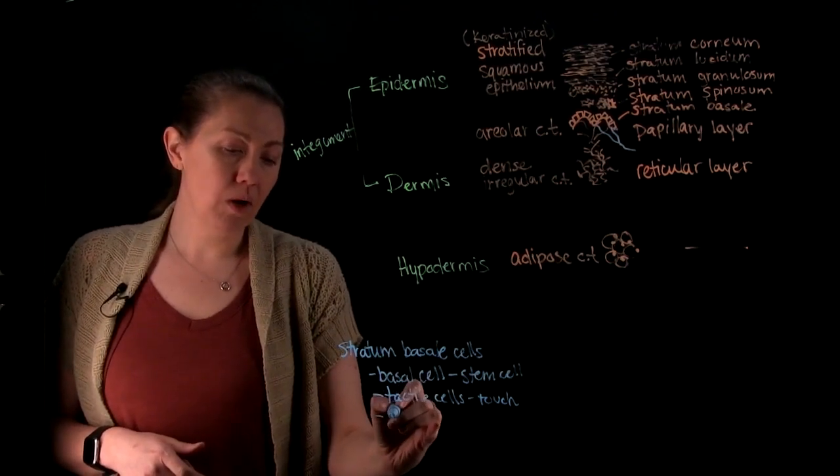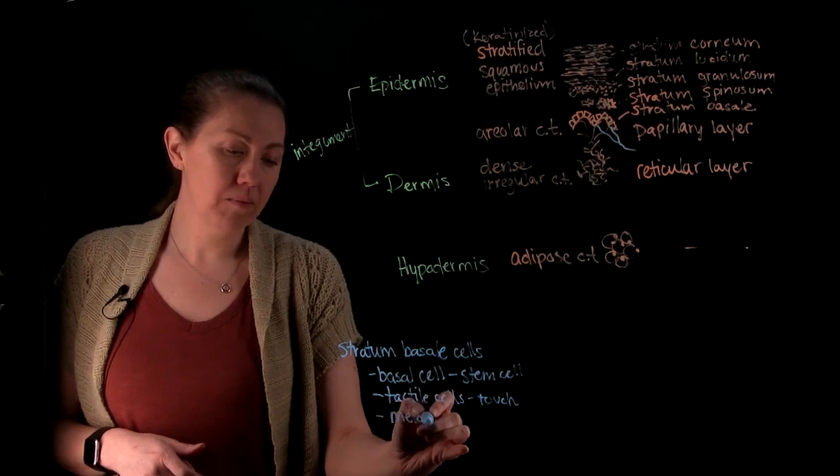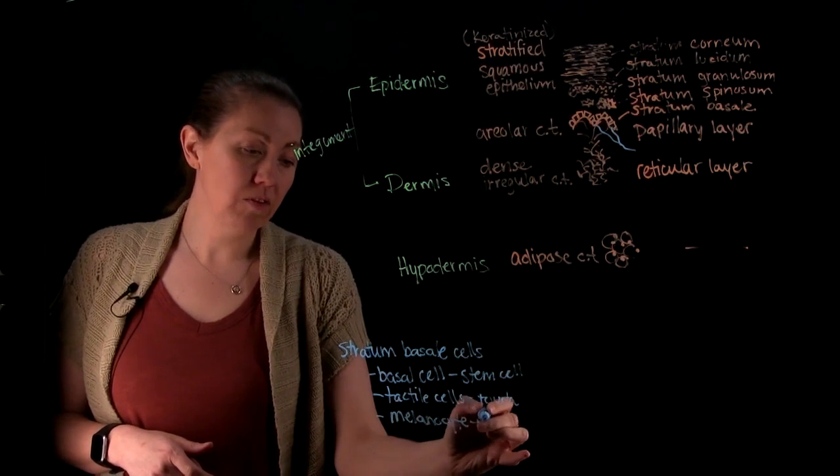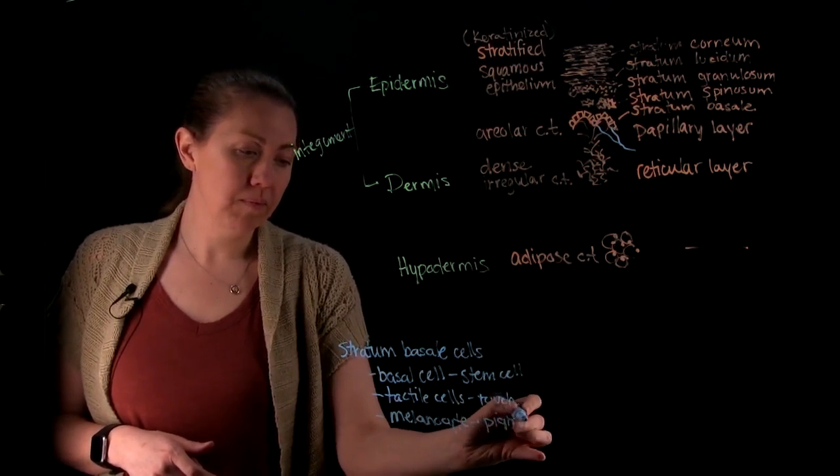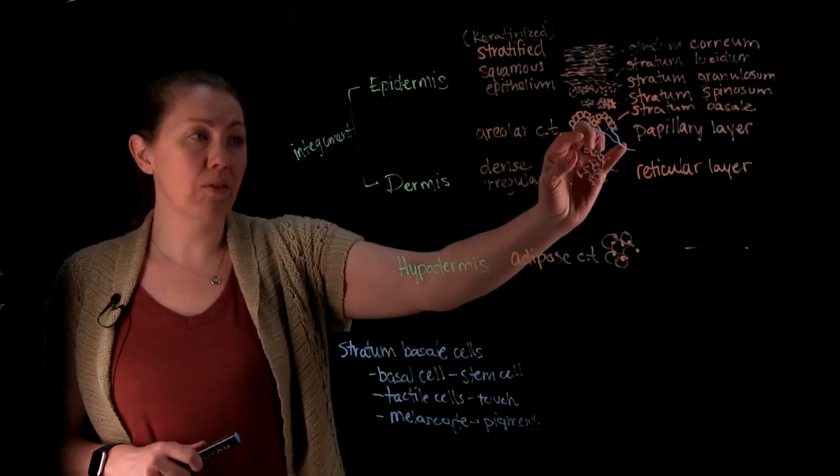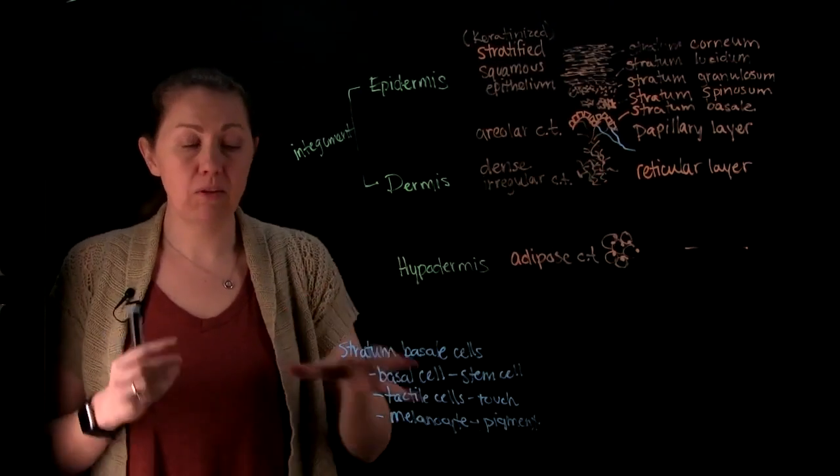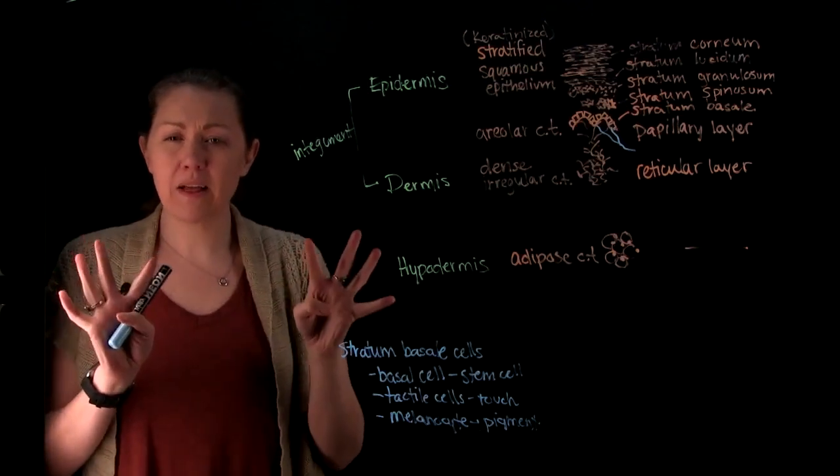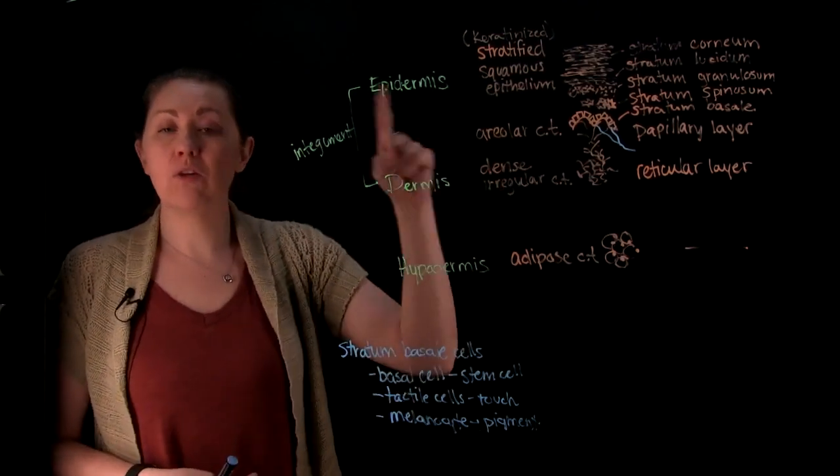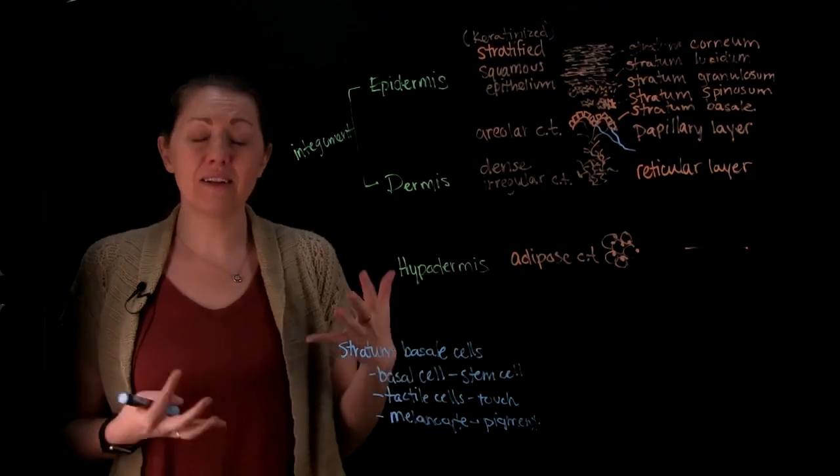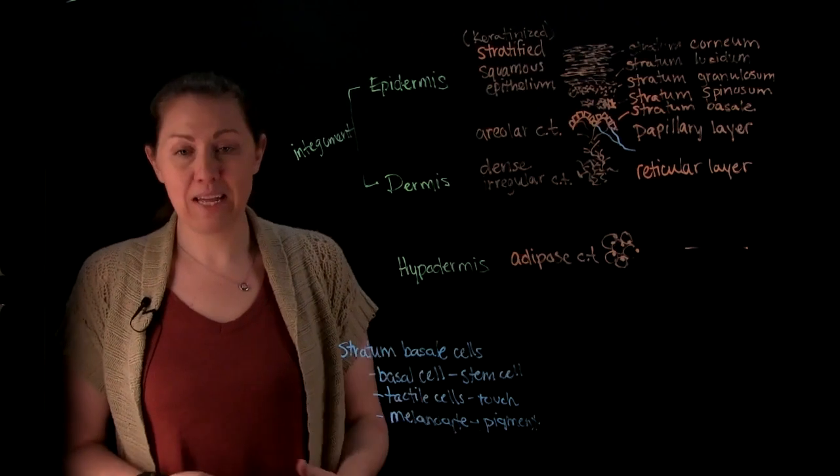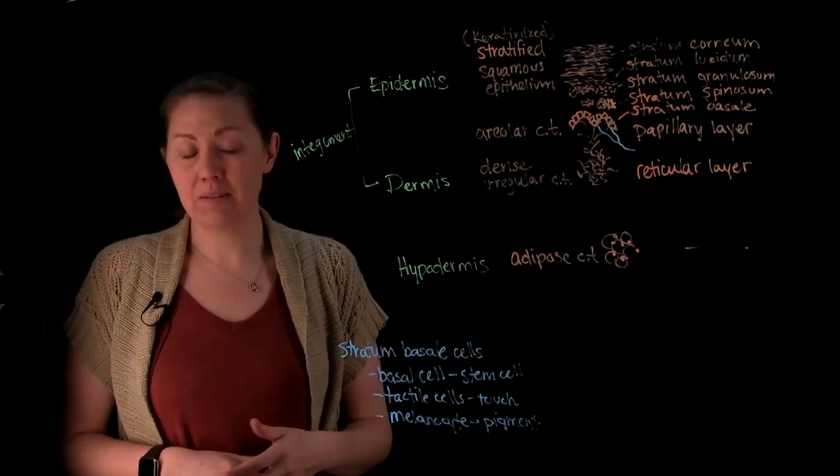And then the third one is your melanocyte. These make melanin which is the pigment. And that melanin is there to protect the neighboring cells. So they release the melanin. Actually these cells will have kind of projections on them. Increasing surface area so they can release that pigment into the neighboring cells. It'll surround the nucleus to prevent the DNA from getting denatured or changed because of UV radiation. So it's to protect you from light basically.